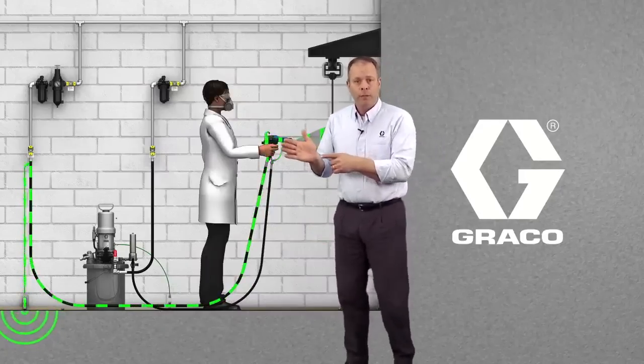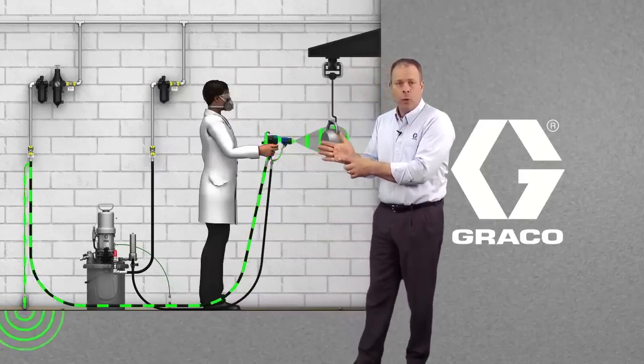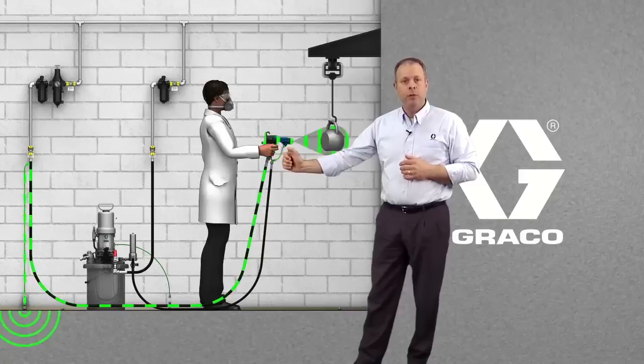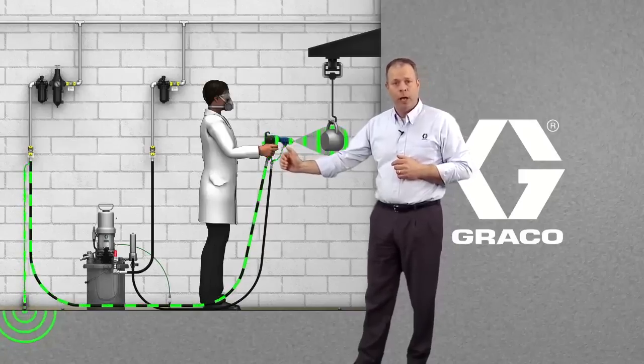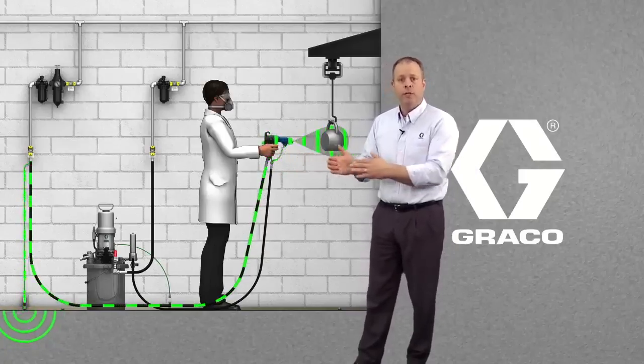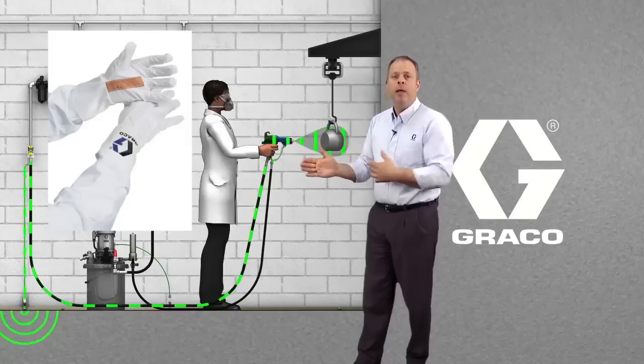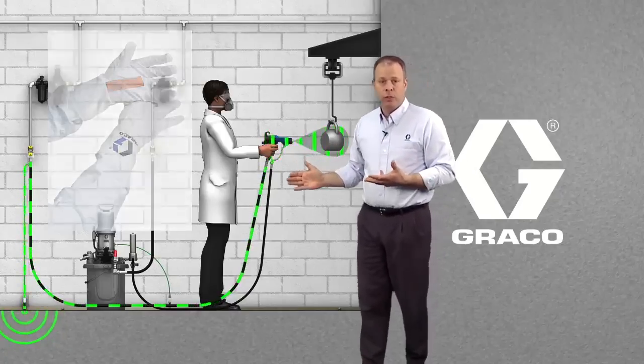If the operator is wearing gloves, we have to make sure that there's a hole cut in the hand of the glove, so the operator still comes in physical contact with the gun. Or if the gloves they're wearing have a strip, a groundable strip on the palm, that's good as well.